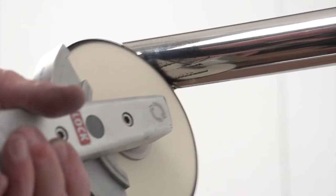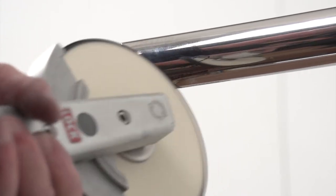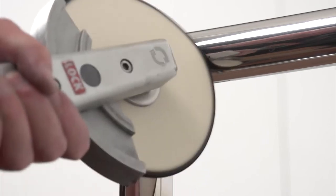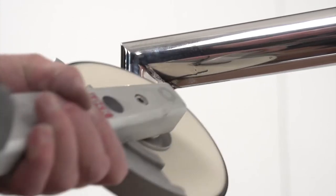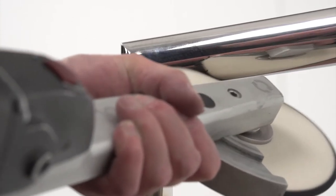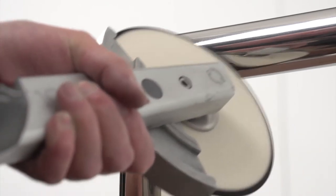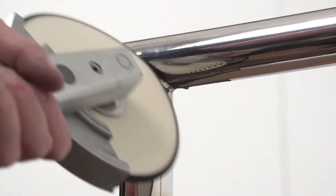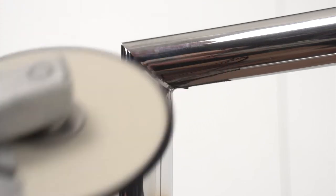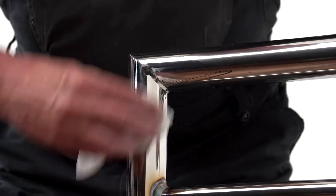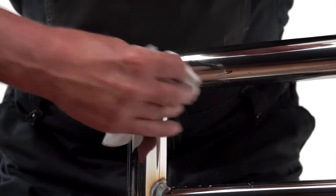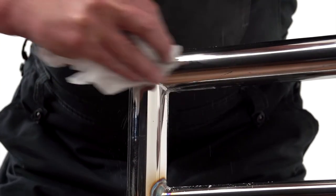Proceed very carefully in order to avoid damage. Remove the remains of the polishing paste here too with the Vienna chalk and the microfiber cloth.